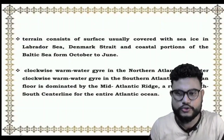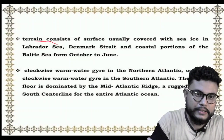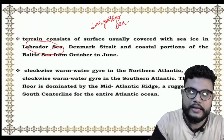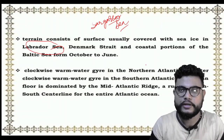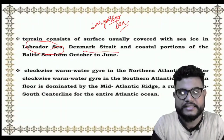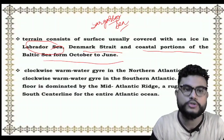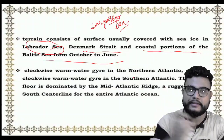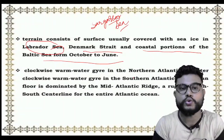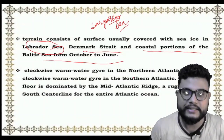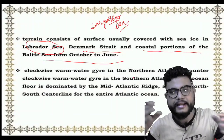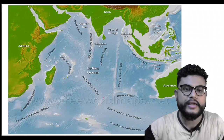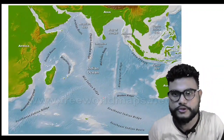Some important seas in the Atlantic Ocean include the Labrador Sea and the Sargasso Sea. The Denmark Strait and coastal portions of the Baltic Sea from October to June — the Baltic Sea is in Europe, and it connects to the Atlantic Ocean through the Denmark Strait. Where warm water current and cold water current meet, a gyre also forms. A gyre is the circulation of oceanic water.